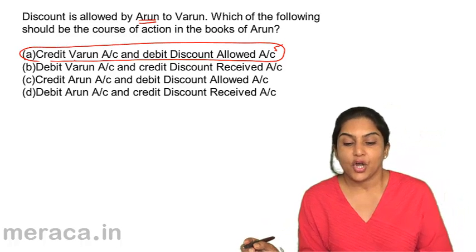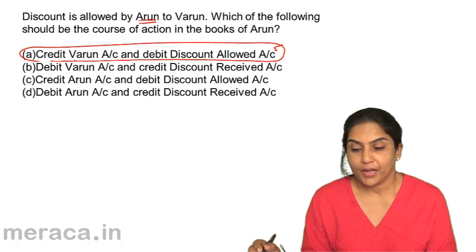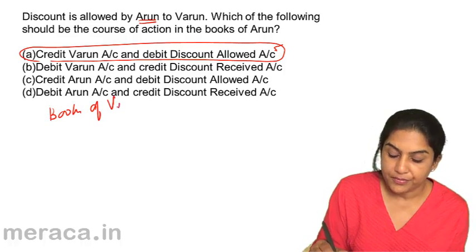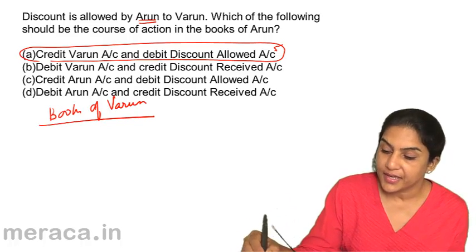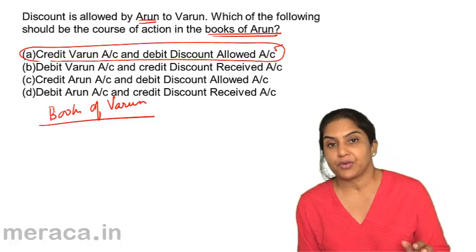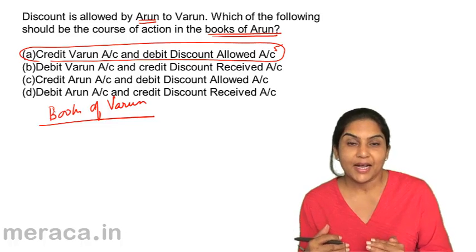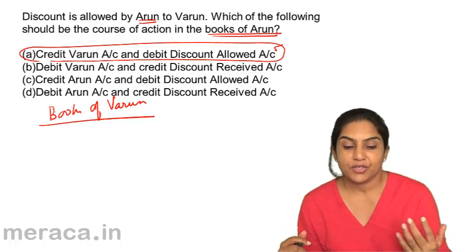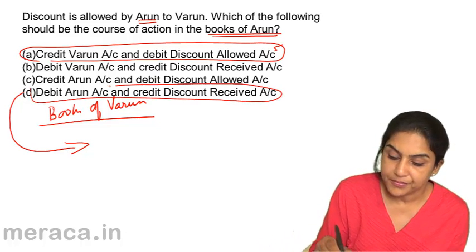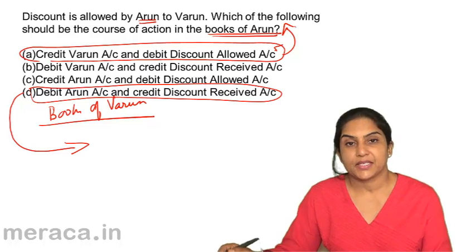In the books of Arun, he will debit discount allowed and credit Varun's account. Option A is correct: Discount Allowed account debit to Varun. In the books of Varun, discount is received, which is an income — it will be credited. Therefore, Arun's account would be debited. Discount allowed is an expense; discount received is income.